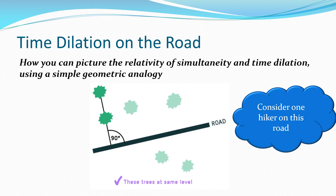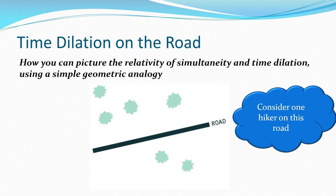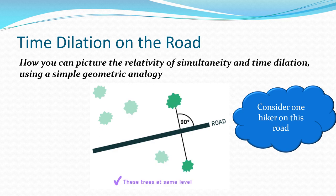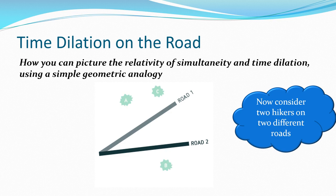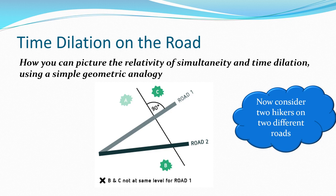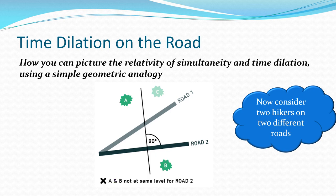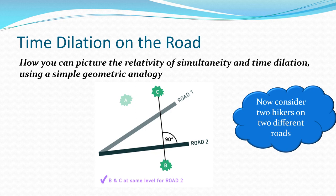To answer this, imagine a road. As we walk down the road we can see when trees are at 90 degrees to the road and when they're not. Now with two different hikers on two different roads: tree A is at 90 degrees to road one but not to road two. Tree B and C are 90 degrees to road two, but if you're on road one they're not 90 degrees to you — you have a different frame of reference.